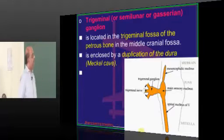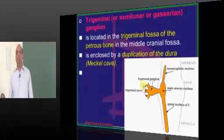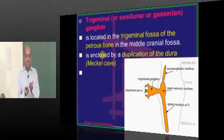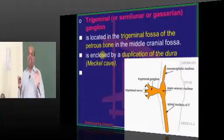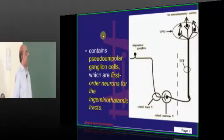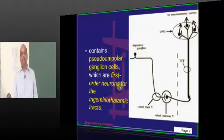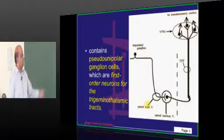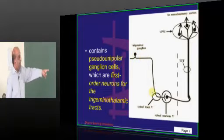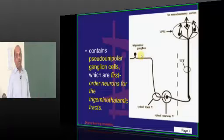Before discussing each nucleus, there is one ganglion for the trigeminal called the trigeminal ganglion, with which all these nuclei communicate. This ganglion is located in the trigeminal fossa in the petrous part of the temporal bone in the middle cranial fossa, where the dura gets duplicated and forms a place called Meckel's cave, where the trigeminal ganglion stays. It contains pseudo-unipolar ganglion cells, which are the first-order neurons for the trigeminothalamic tract (TTT).